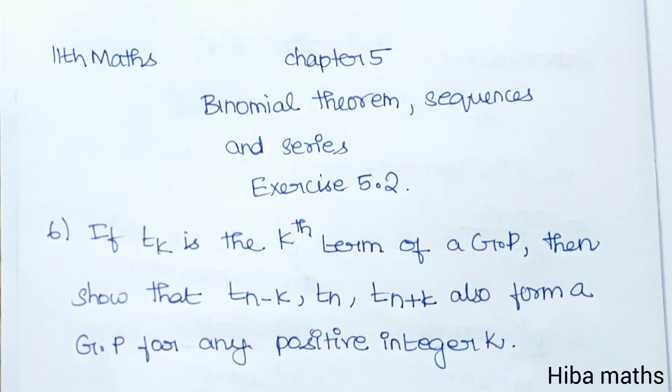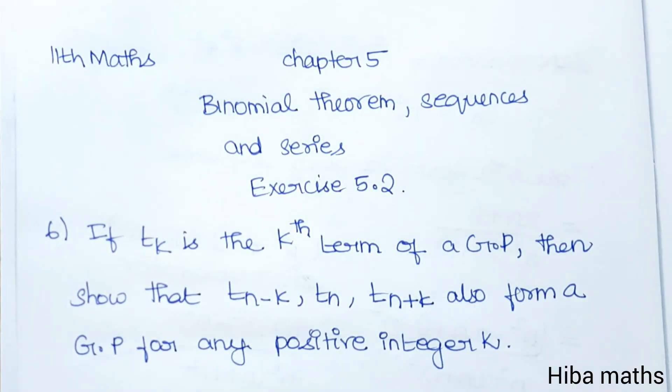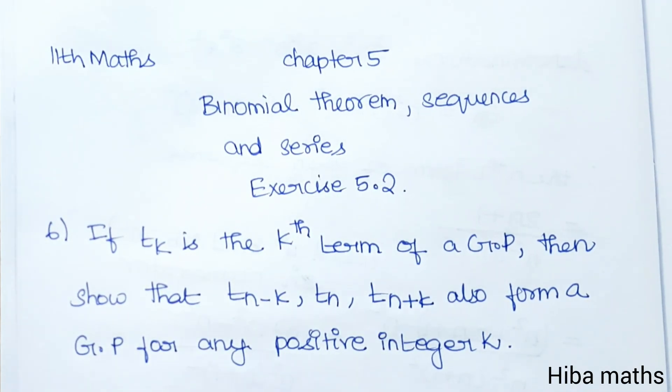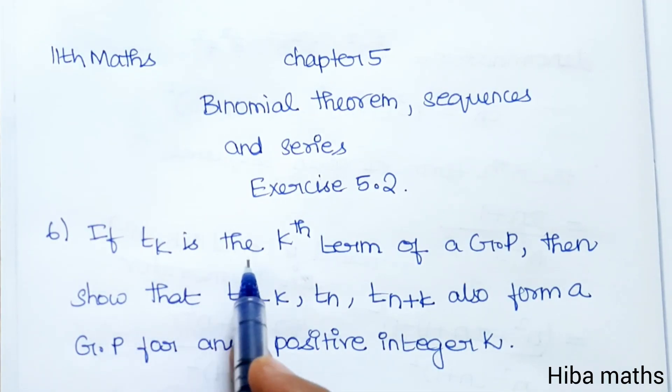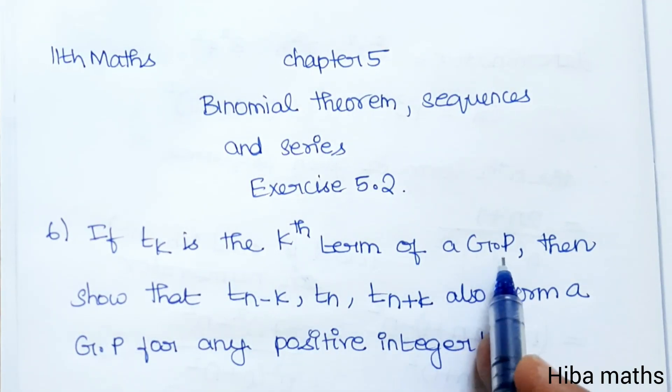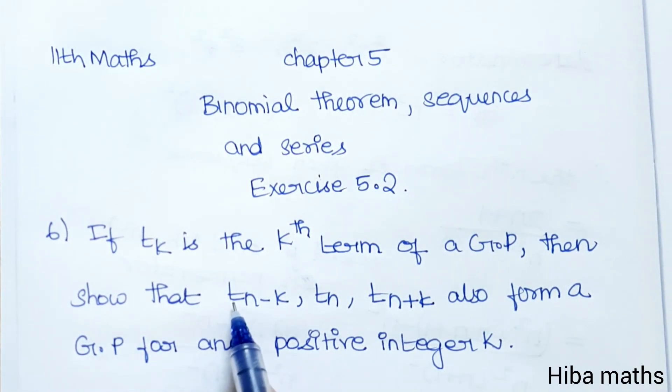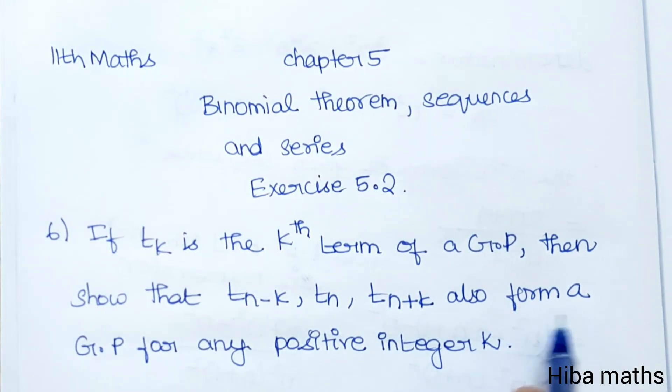Hello students, welcome to Hiba Maths, 11th standard Maths Chapter 5, Binomial Theorem, Sequences and Series, Exercise 5.2, question 6. If t_k is the kth term of a GP, then show that t_{n-k}, t_n, t_{n+k} also form a GP for any positive integer k.